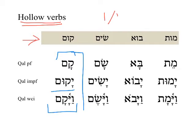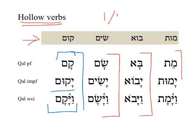However, it's apoccopated in the vav-consecutive imperfect form — 'and he arose.' We see similarly with other verbs like שִׂים (sim), 'to put' or 'to place,' or בּוֹא (bo), 'to come,' or מוּת (mut), 'to die.' In the perfect form, these are hollow — the middle root letter drops out. In the imperfect, the middle root letter is there and it stays, but it apoccopates in the vav-consecutive imperfect.